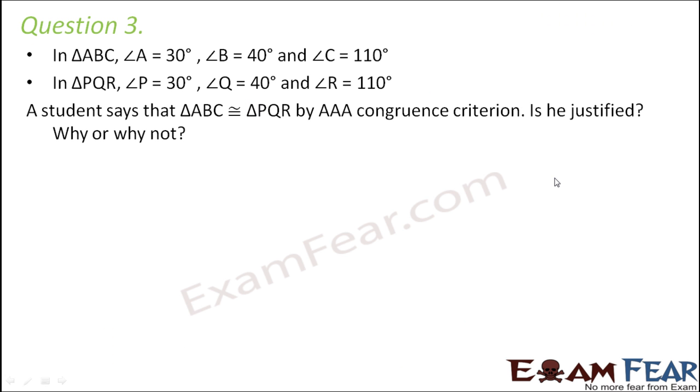Question number 3. In triangle ABC, angle A equals 30 degrees, angle B is equal to 40 degrees, and angle C is equal to 110 degrees. So let us draw a rough figure for this triangle. Let us call this angle A as 30 degrees. Let us call this as angle B, which is 40 degrees, and let us call this as angle C, which is 110 degrees. So this is triangle ABC.